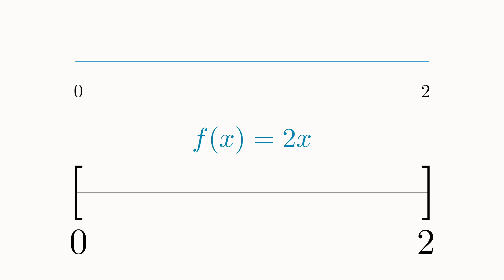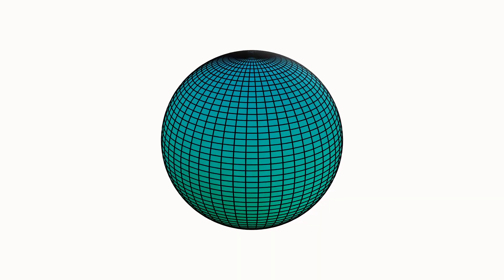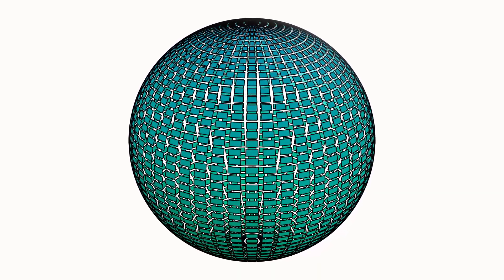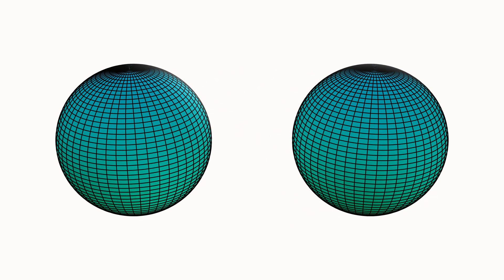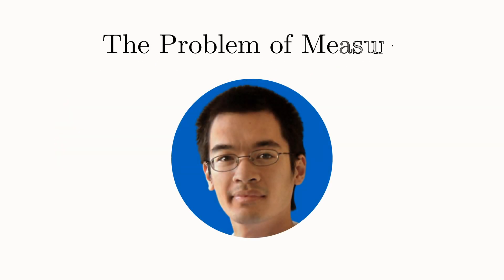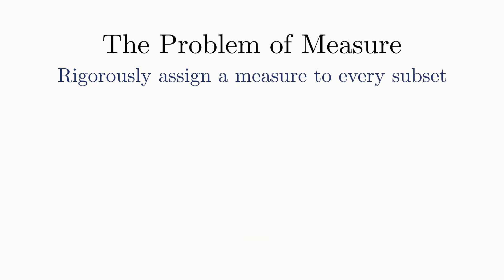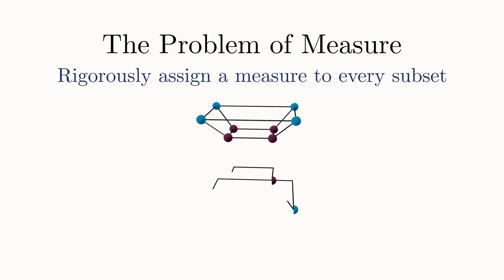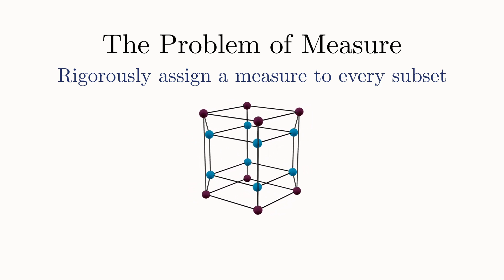If you saw one of my previous videos on the Banach-Tarski paradox, no doubt this will remind you about how a ball with a fixed volume can be broken apart and rearranged to form two copies of the original ball. All of these examples highlight what the famous mathematician Terence Tao calls the problem of measure — the problem of defining a mathematical theory that can clearly and rigorously assign a volume or measure to every mathematical subset in any arbitrary dimension.